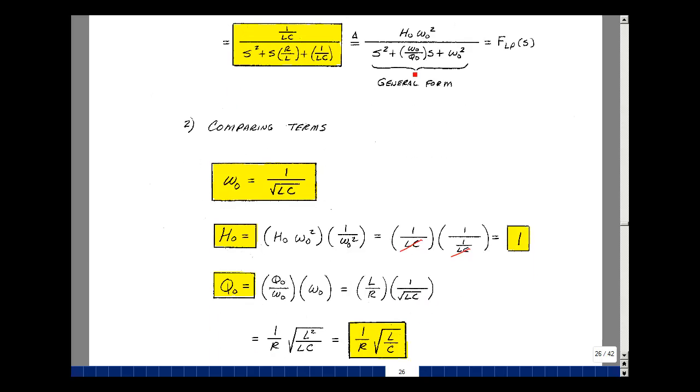Likewise, the value of Q is embedded in this term, and so omega naught over Q naught is equal to R over L. So if I take the reciprocal of that, Q naught over omega naught, and multiply it by omega naught, they cancel, and I get the value of Q naught.